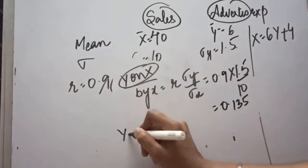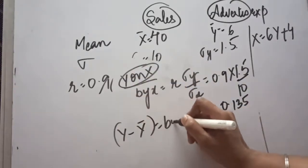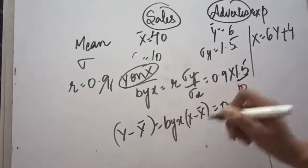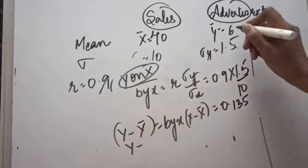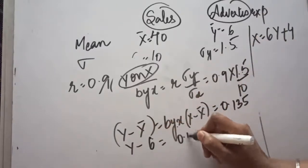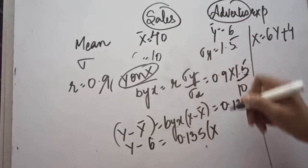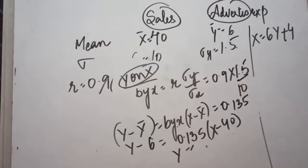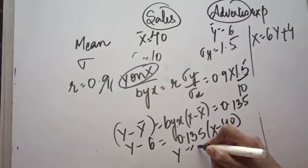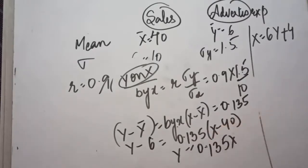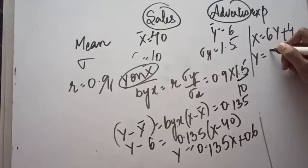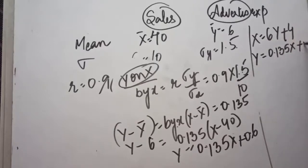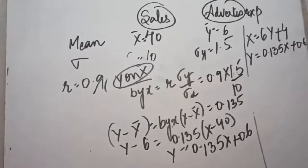Solving: byx = 0.9 × 1.5 ÷ 10 = 0.135. For the y on x equation: y minus y mean equals byx times (x minus x mean). Substituting: y minus 6 = 0.135 × (x minus 40). Keeping y on the left-hand side, this simplifies to y = 0.135x + 0.6. So our second answer is y = 0.135x + 0.6. These two equations are obtained using the correlation and standard deviations.